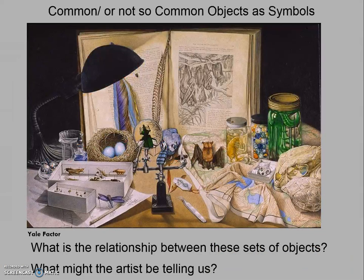We also have common — or not so common — objects as symbols. Looking at this artwork by Yale Factor, ask yourself: what is the relationship between these sets of objects? What might the artist be telling us? These objects are all visual cues and clues that advance a story and give us insight into what they're doing and why. He consciously made decisions about the objects he used and arranged them in a very specific way to draw our attention but also advance his idea. Ask yourself: what might he be saying?